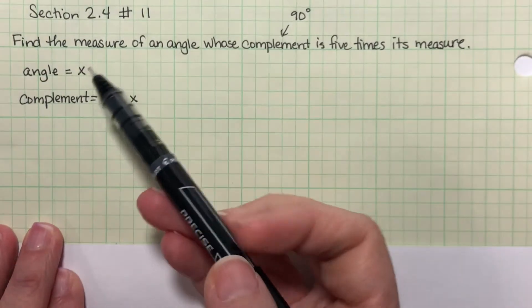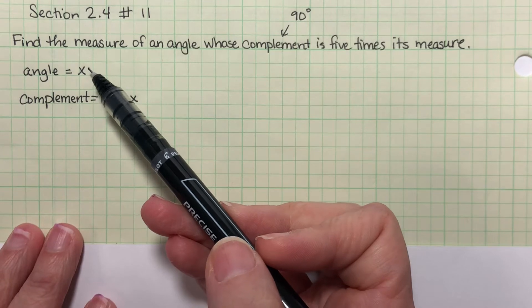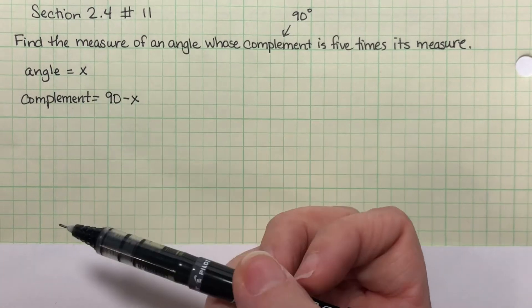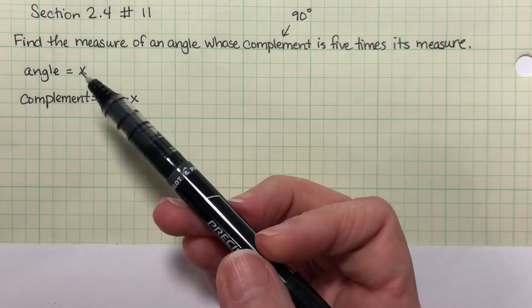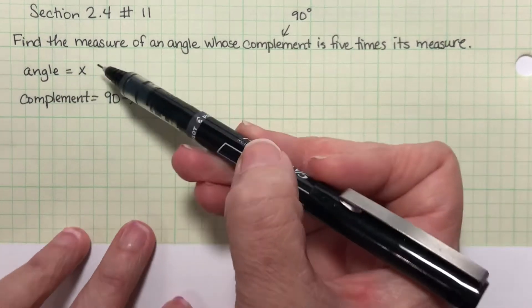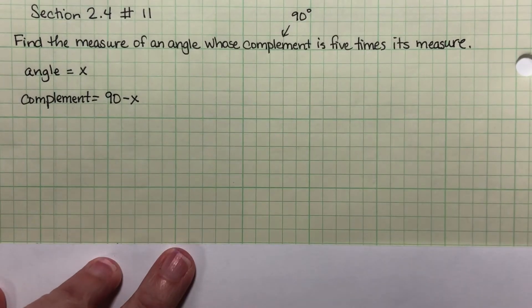So imagine for a second that your angle is a 40 degree angle. The way to find the other part would be 90 minus 40, which will give you 50. 40 and 50 degree angles are complements because they add up to 90. So whatever number I give you, you would subtract it from 90 to find the one that goes with it, to find its pair.